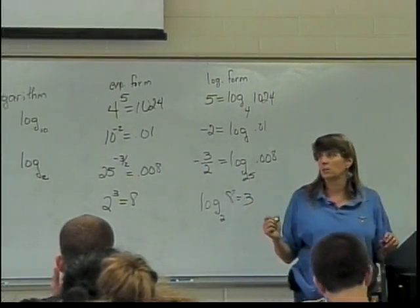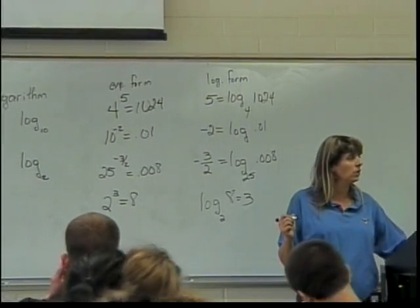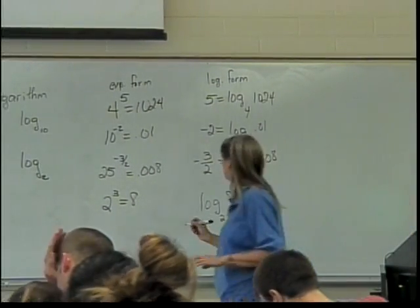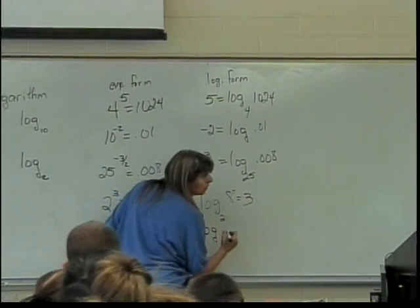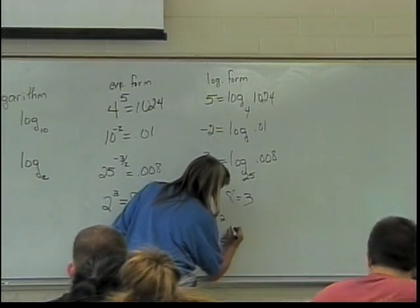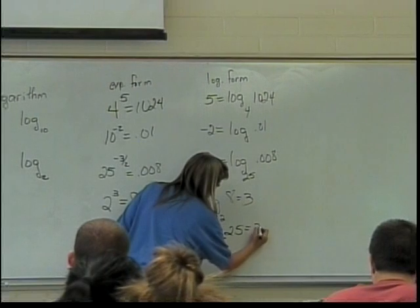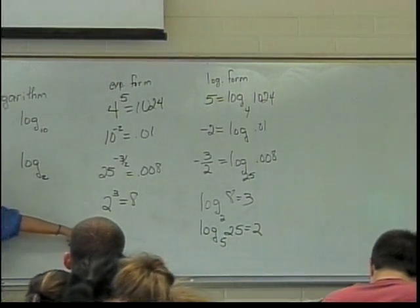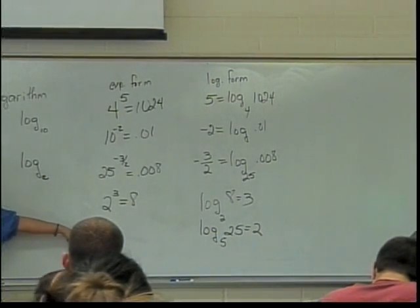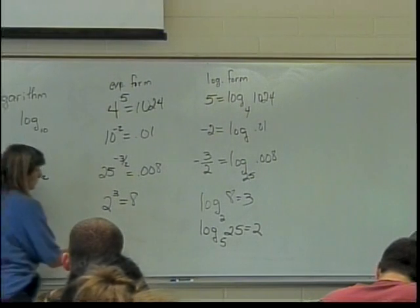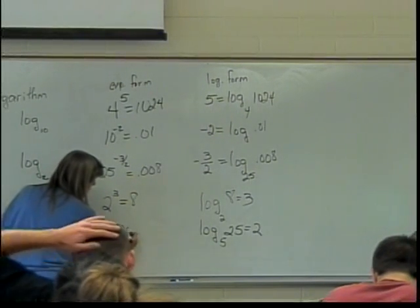You guys are all going, okay, this seems really easy. And yes, it is. Once you get used to it, you're going, oh, this is simple. What if I have log base 5 of 25 equals 2? What will that look like when I change to exponential form? 5 squared equals 25.